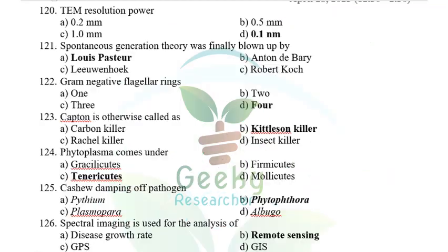TEM (Transmission Electron Microscope) resolution power is 0.1 nanometer. Spontaneous generation theory was finally disproved by Louis Pasteur, who came up with the germ theory.